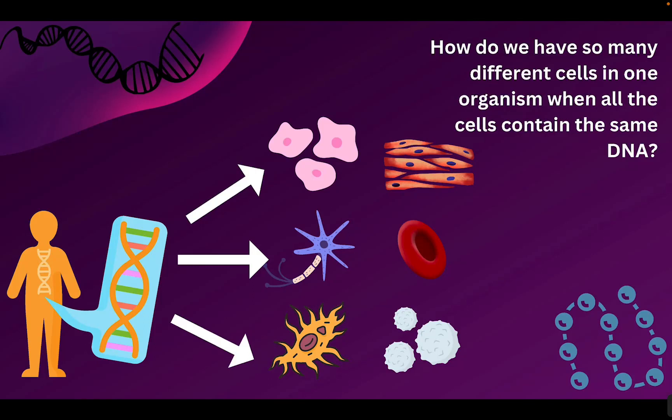For today's set of notes, I wanted to start with a question. In a single organism, we have tons of different cells, but all the cells should have the same DNA. So why in a living organism, such as a human, do we have so many different cell types if all have the same DNA? You can even see on the screen here, we have skin cells, blood cells, immune cells. They look different in shape, size, color. What's the reason for this if we're all using the same instructions?